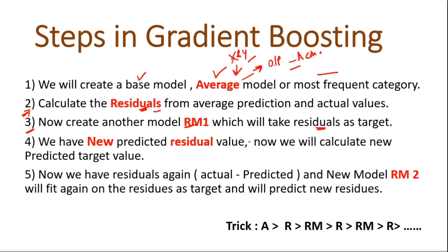Step 3: create RM1, which takes residuals as the target. In RM1 I use X (independent variables) and residuals — I do not use Y here. This model is fit on the residuals, which is essentially the optimizing function. RM1 will give me new predicted values of residuals. Then I subtract those residuals from my actual value to get updated predictions.